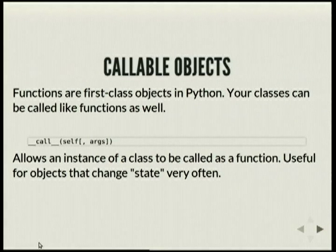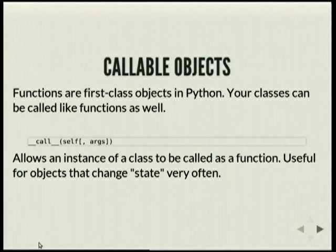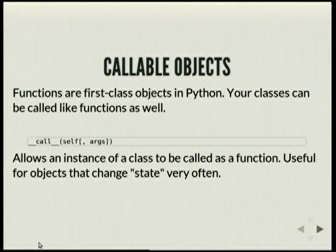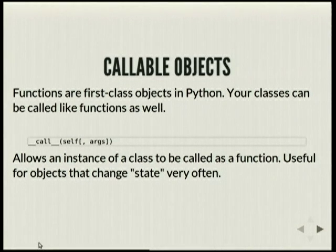Callable objects: functions are first-class objects in Python, so your classes can also be called and passed arguments. So you can override __call__, and whenever the instance is called with any arguments, it'll go to __call__, and you can provide any statefulness or any logic in there.